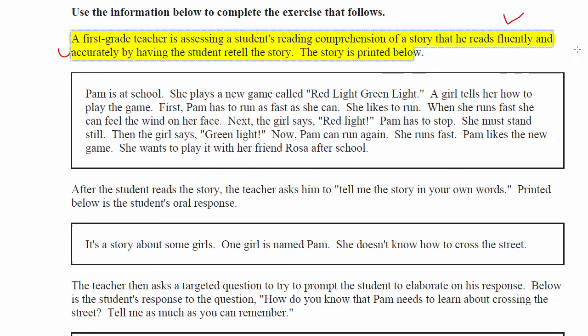One thing you might want to do, after noting that this is narrative text, is to write down a little L-I-E — that stands for literal, inferential, and evaluative — and check off what the student has and what the student lacks. I would use check marks for what the child did correctly versus incorrectly. When you do a retelling, you're really looking for factual understanding and whether the student names all the details you want.